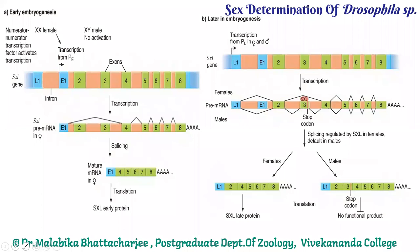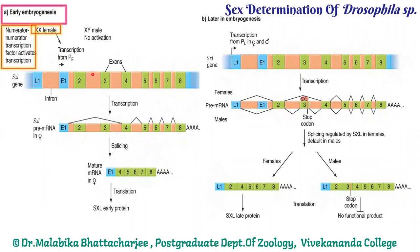Now let us look at early embryogenesis. There are two states: early embryogenesis and late embryogenesis. We concentrate on early embryogenesis for a female fly. In females, the numerator gene products have homodimerized to form the transcription factor, as previously studied. The SXL cell gene has two promoter elements: the early promoter (PE) and the late promoter (PL). In females, since the numerator-numerator transcription factor is present, and the numerator gene product is more, excess numerator subunits are available compared to denominator subunits.